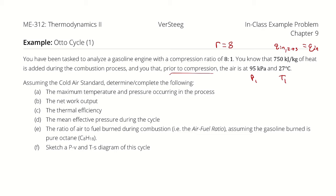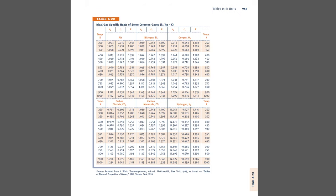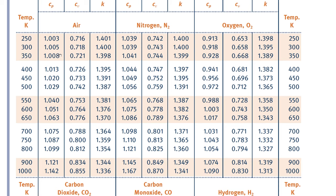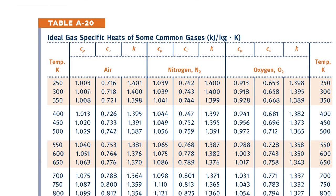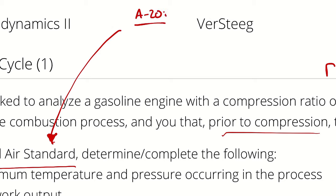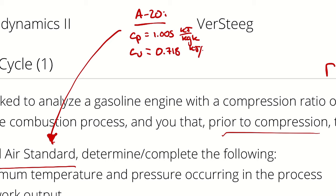Because we are told to analyze this using the cold air standard, we are going to use the properties for ideal air at 300 Kelvin from table A20. For ideal air at 300 Kelvin: CP = 1.005, CV = 0.718, and K = 1.4. The cold air standard means we assume constant specific heats, so anytime we encounter a delta U or delta H, we substitute with CP or CV times delta T. It also means we can use isentropic ideal gas equations on any isentropic process.